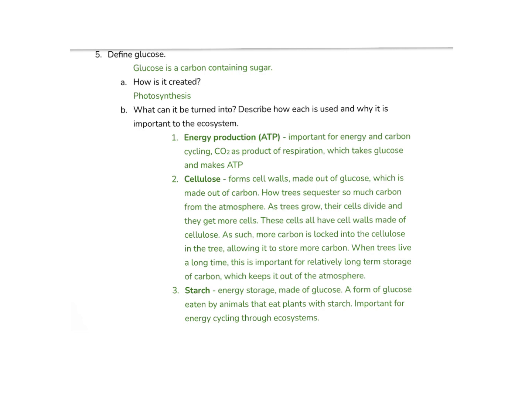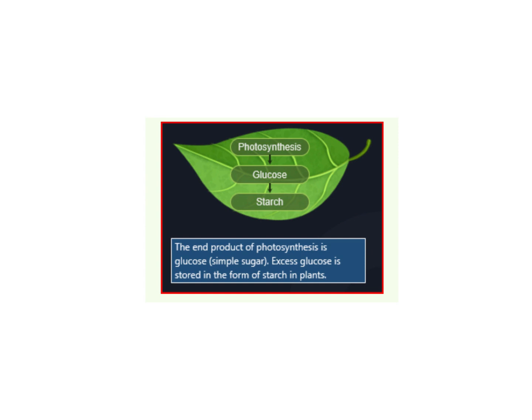Starch is energy storage for the plant. It's made out of glucose. It's a form of glucose that's eaten by animals that eat plants, and it's really important for energy cycling because this is how the glucose is going to be transferred to the organisms that consume it. So during the process of photosynthesis, glucose is created, and the glucose can then be assembled to make starch. Starch is this long chain of a bunch of glucoses attached together. Let me show you a picture of that.